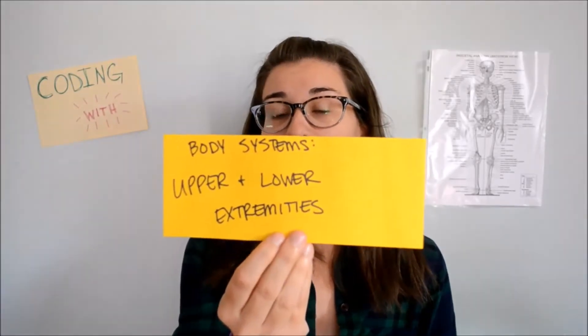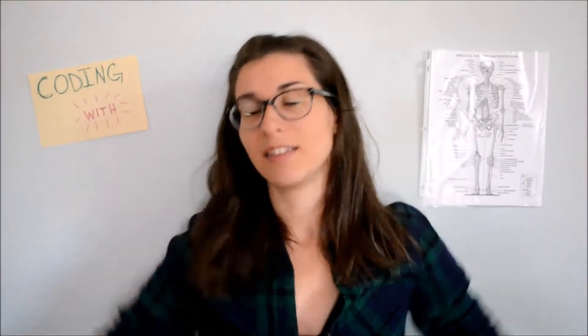As far as the body systems go, the ones that are available are more body regions, and there are chapters within the PCS code book that cover those, which are basically body regions that cover overlapping body layers. So detachment would be found in any of those, specifically the upper and lower extremities — the upper and lower extremities being your arms and your legs.